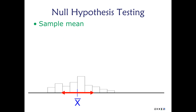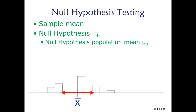Null hypothesis testing takes this to a more complex level. We have a sample mean and we specify a null hypothesis. The null hypothesis is a devil's advocate position — something we don't think is true but is believable. It's a plausible alternative, and we compare our hypothesis — the one we think is actually going on — against the null hypothesis, letting the data decide which has the most support. The null hypothesis mean is sometimes called mu naught or H-naught, with 'naught' meaning nothing.